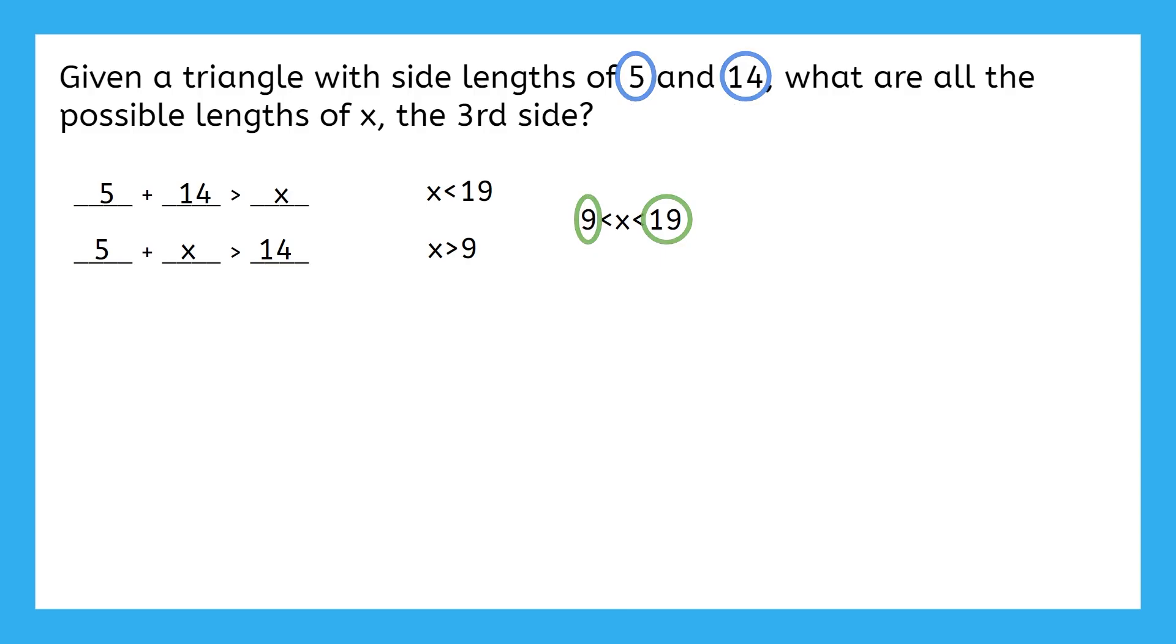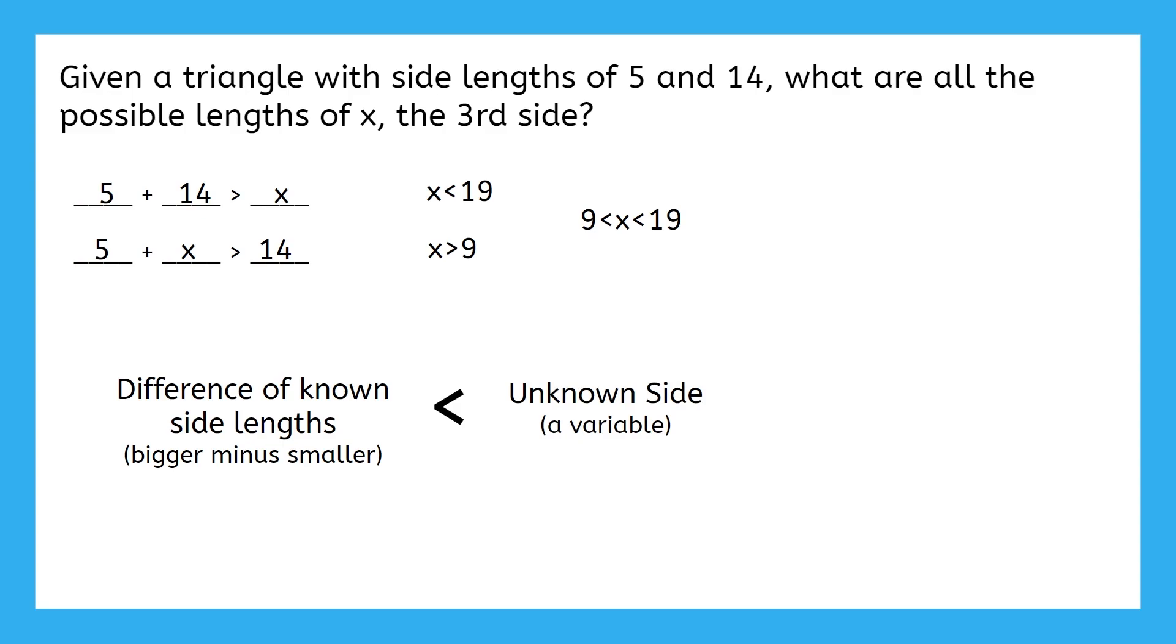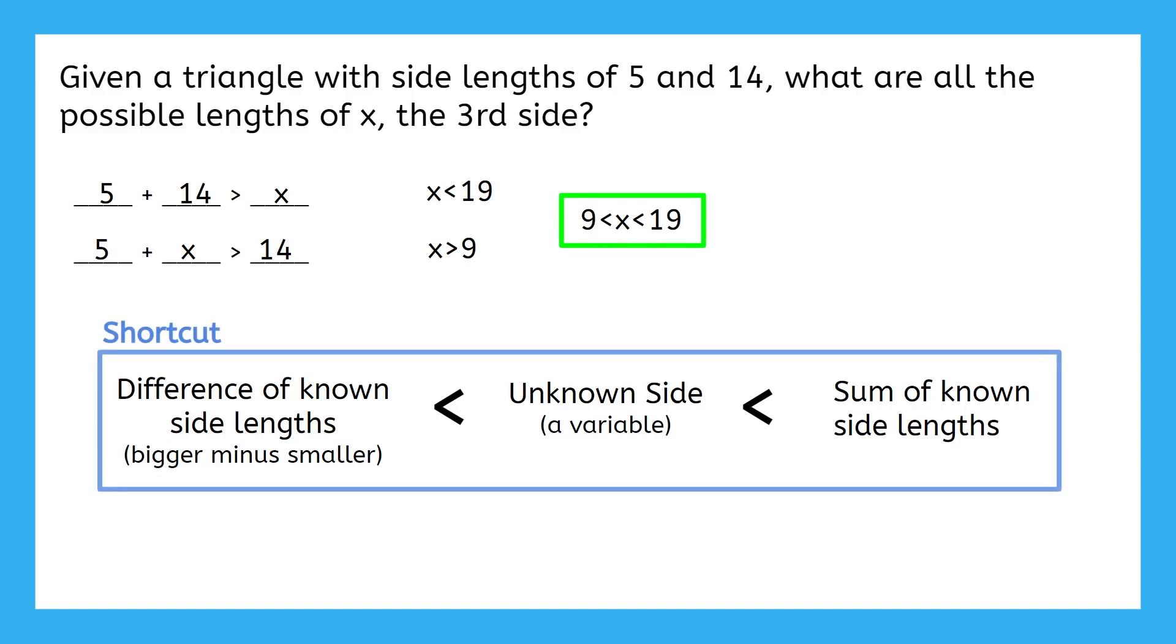We subtract the side lengths, put a less than symbol, write whatever variable represents the missing side, put another less than symbol, and then add the side lengths. Here, we have our final answer and a shortcut for getting there.